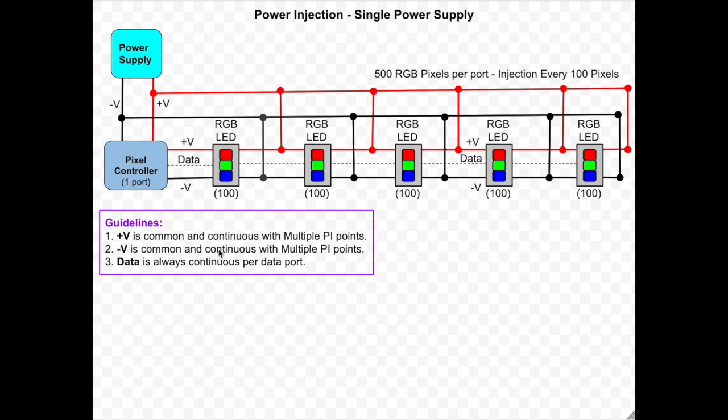Minus V is common and continuous with multiple power injection points. It's the same as the plus V. You can put it at multiple places and connect it to the power supply. Data is always continuous per data port.